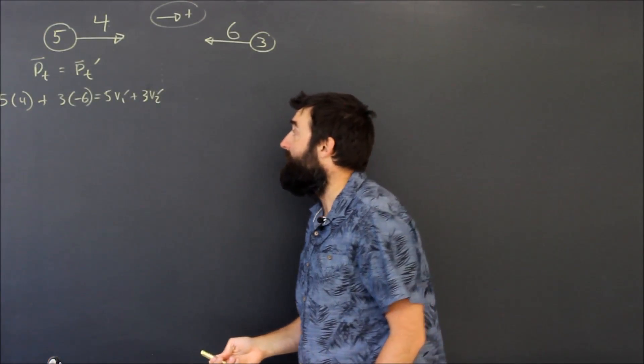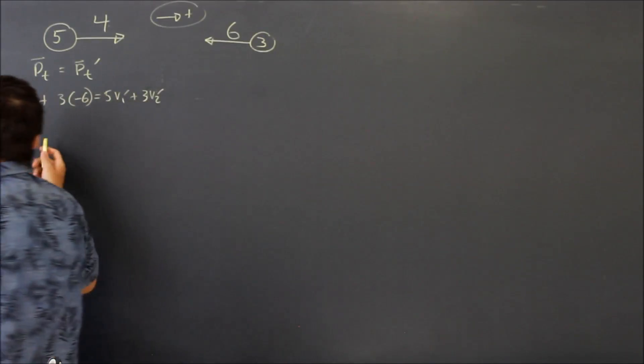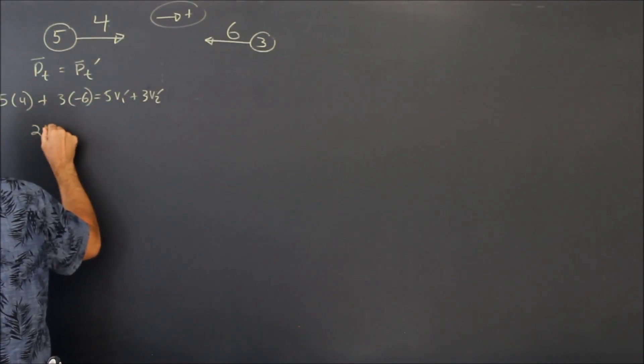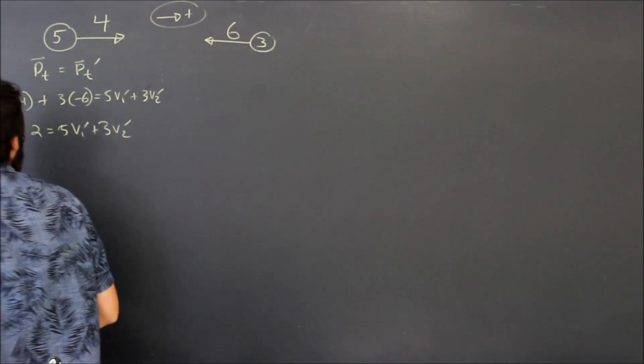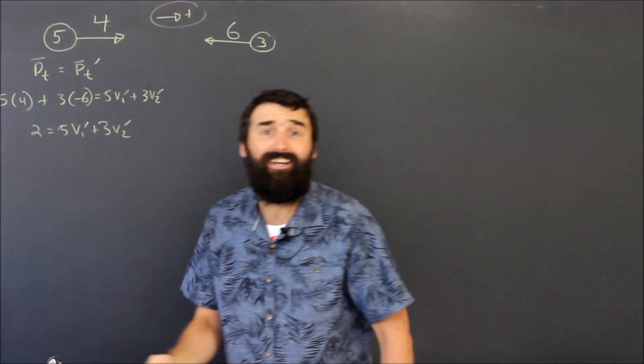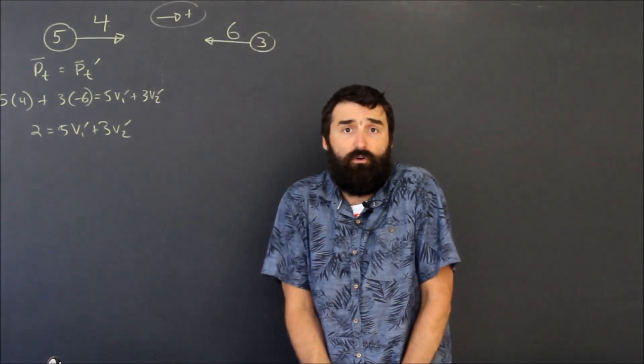So there's my momentum equation. I'm going to do that every single time. If I simplify it a little bit, I've got twenty minus eighteen, I get two is equal to five v one prime plus three v two prime. Now obviously I can't solve that. That's a single equation with two unknowns.